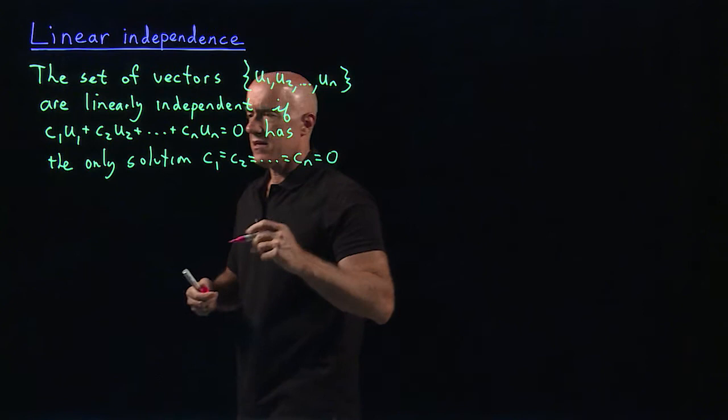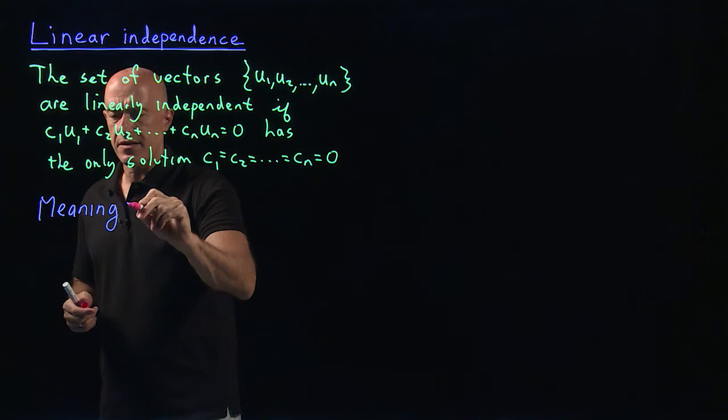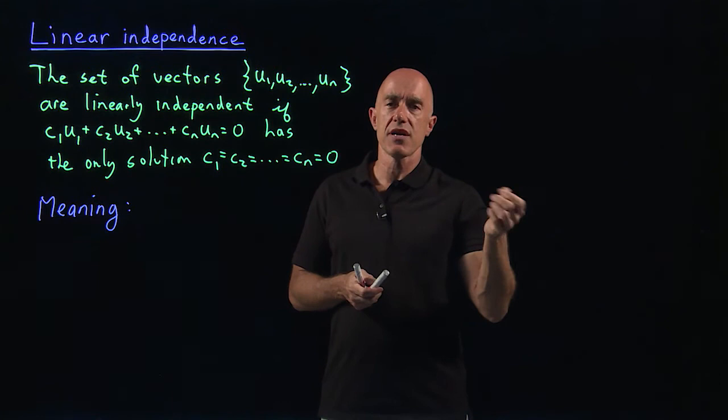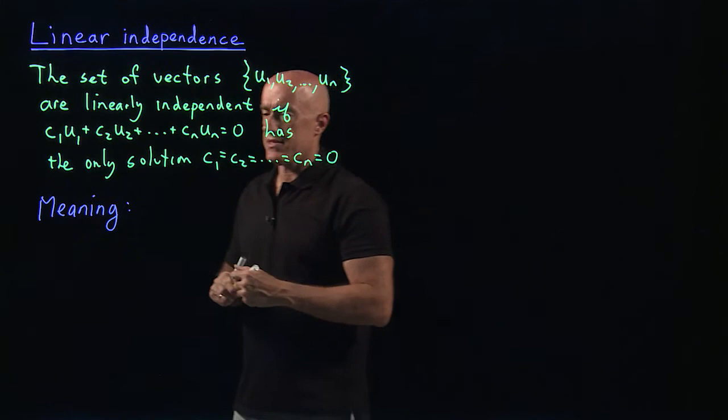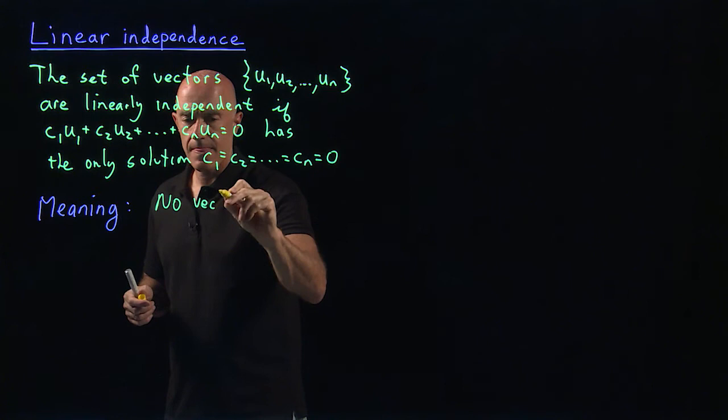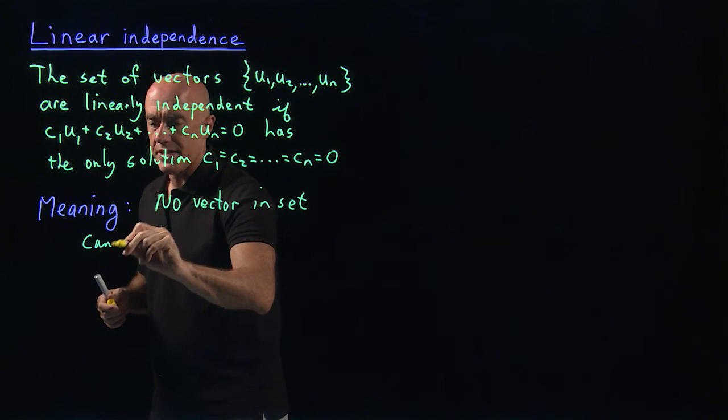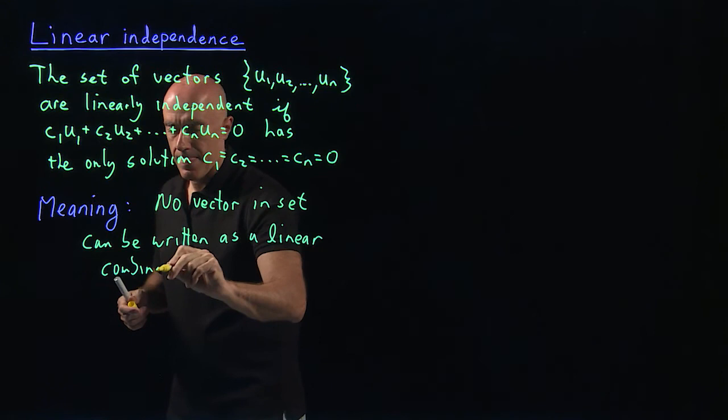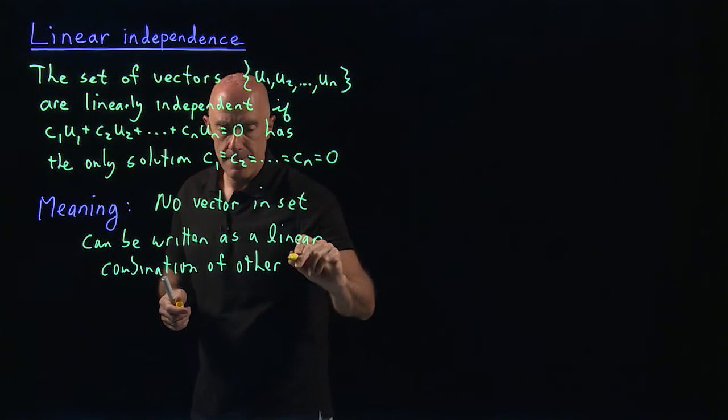The meaning is maybe easier to understand. The meaning is that a set of vectors are linearly independent if you can't write any vectors in the set as a linear combination of other vectors in the set. So, the meaning is that no vector in the set can be written as a linear combination of other vectors. That's kind of the easier way to understand this definition.